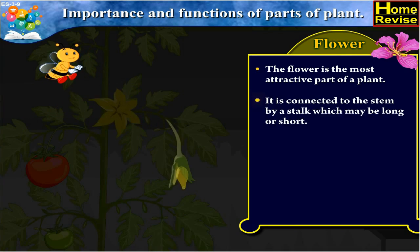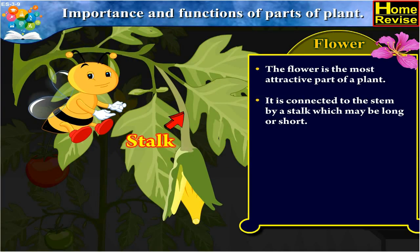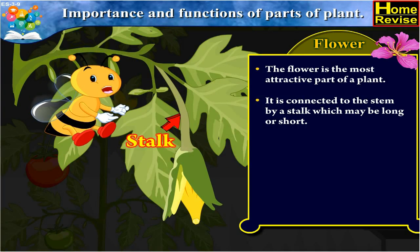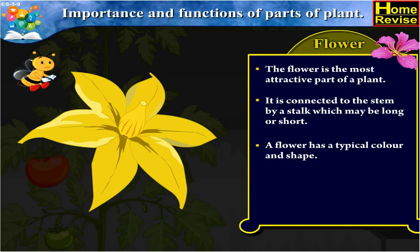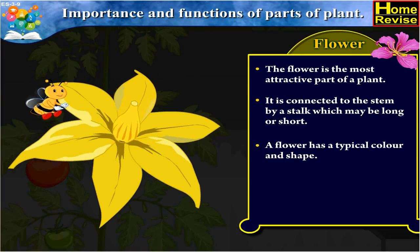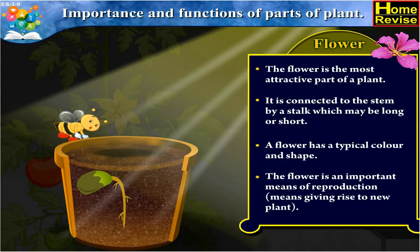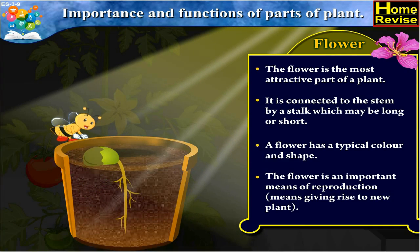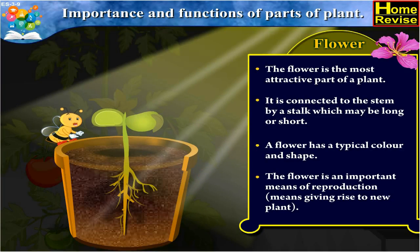It is connected to the stem by a stalk, which may be long or short. A flower has a typical colour and shape. The flower is an important means of reproduction, meaning giving rise to a new plant.